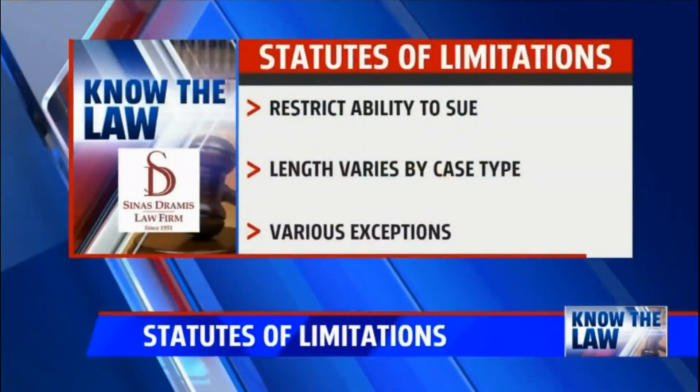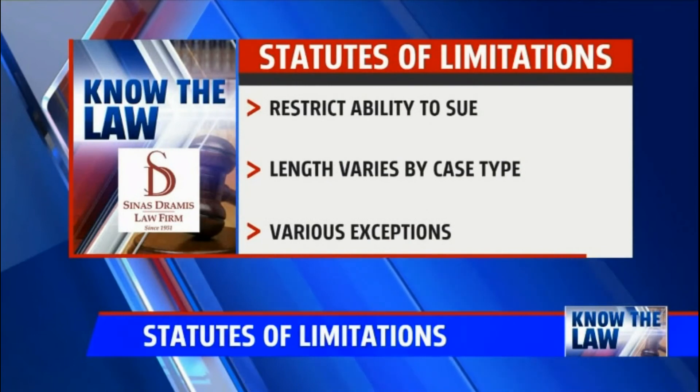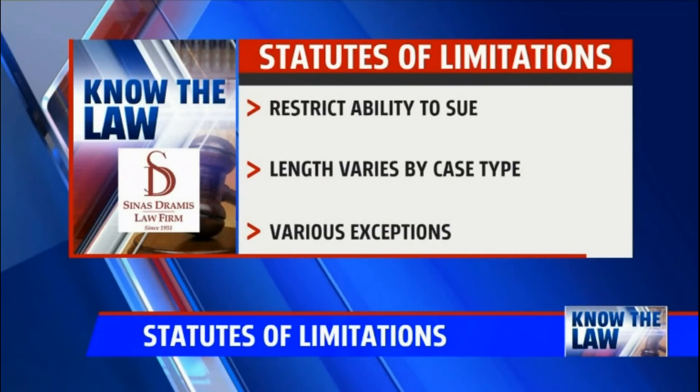Some people ask: are these hard and fast rules with no exceptions? The answer is no — they're not always hard and fast; there are certain exceptions. Cases involving injuries to children are a good example. Children have what we call tolling — they're allowed to toll the statute of limitations so that it doesn't run until generally after they're an adult. In criminal cases, if the defendant decides to leave the state and wait out the statute of limitations, that's not going to work — the statute of limitations can be tolled when the defendant leaves the state.